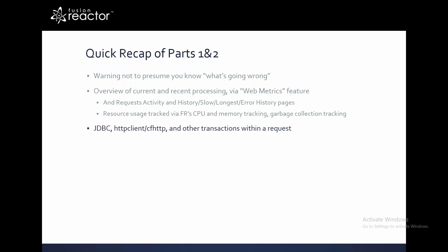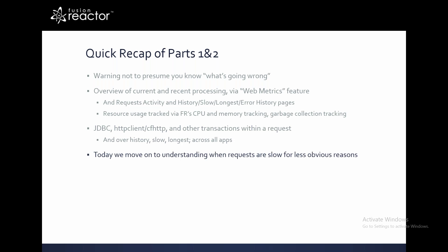In part two I talked about transactions — mostly JDBC transactions, HTTP client or CF HTTP, and other kinds of transactions. You can track those as they're running, over history, slowest and longest, and across all apps. Those things often help you find out why things are slow, but sometimes they don't — and that's what we're covering today.